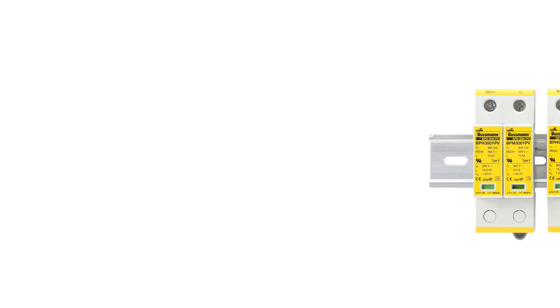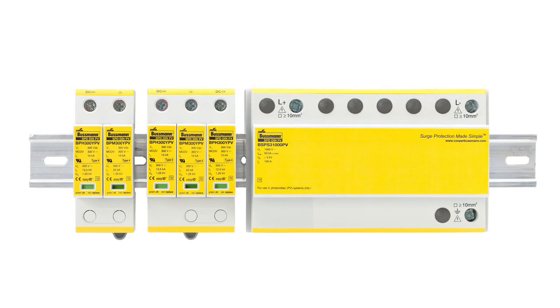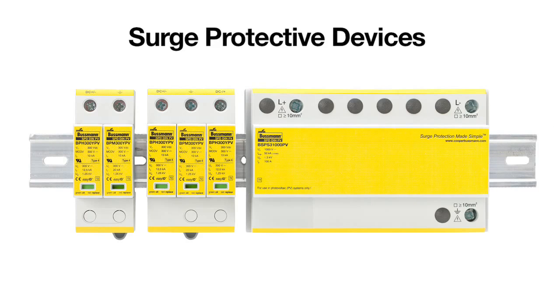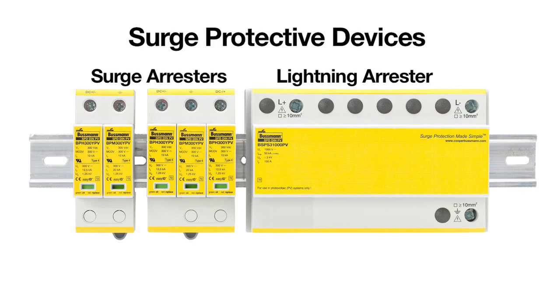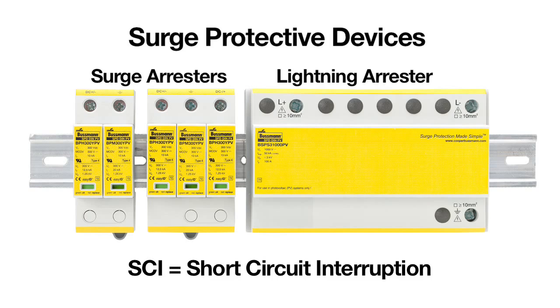Busman offers a complete product line for all photovoltaic applications up to 1200 volt DC. Surge arresters provide patented fast-acting short circuit interruption technology that responds efficiently to over-voltage conditions.